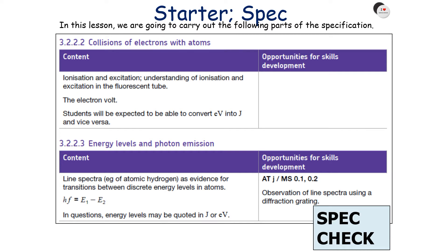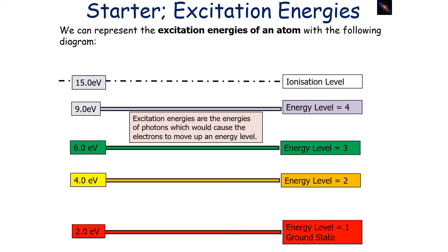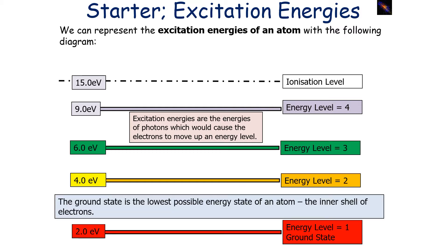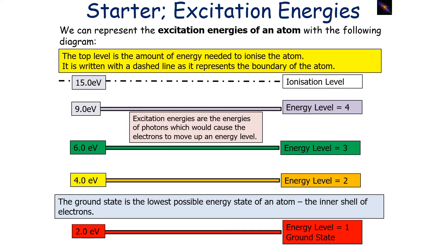We can represent the excitation energies of an atom with the following diagram. Excitation energies are the energies of photons which will cause electrons to move up an energy level. The ground state is the lowest possible energy state of an atom — it's the inner shell of the electrons in the atom. The top level is the amount of energy needed to ionise the atom, and it's written with a dashed line as it represents the boundary of the atom.